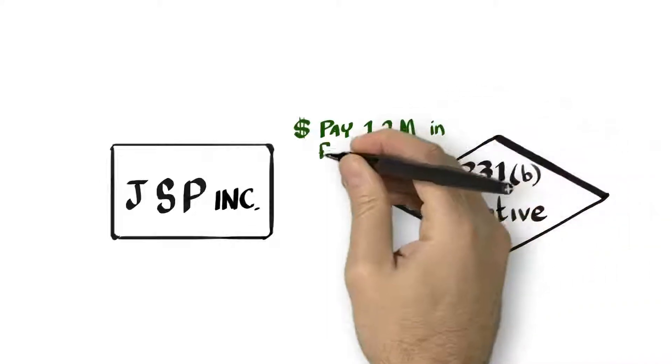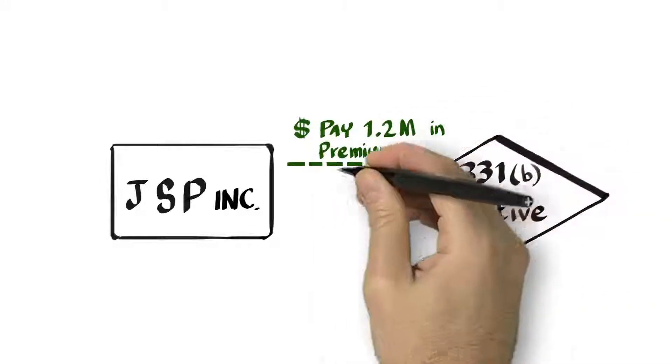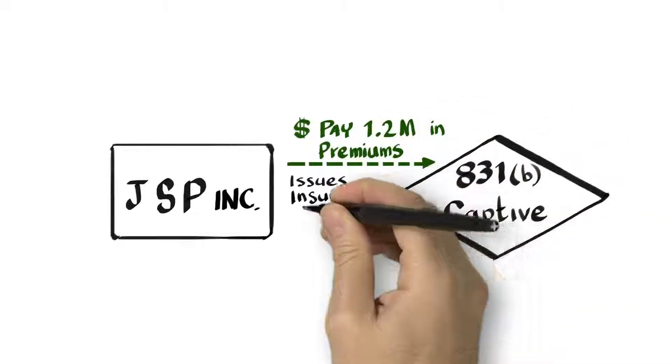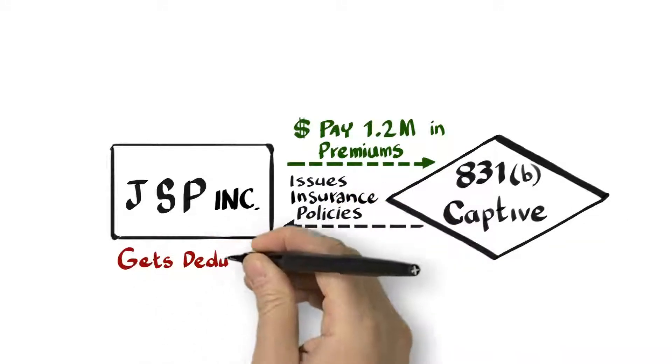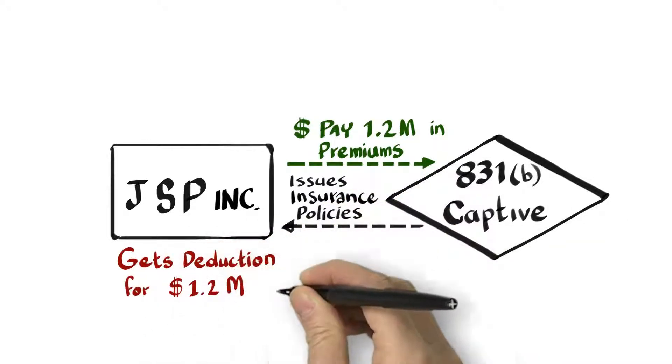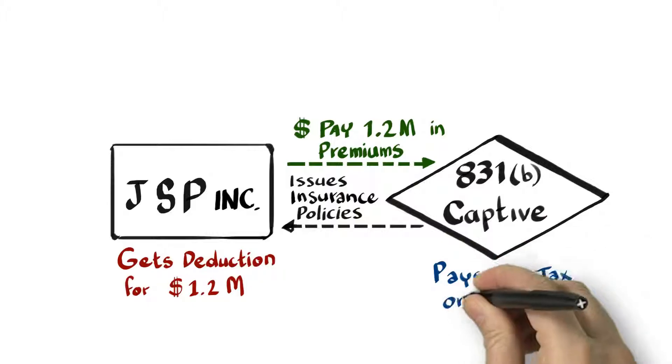The captive is now able to receive up to $1.2 million tax-free in annual premiums as allowed under Section 831B of the IRS tax code, while still allowing JSP the full premium deduction as an ordinary business expense on their corporate taxes.